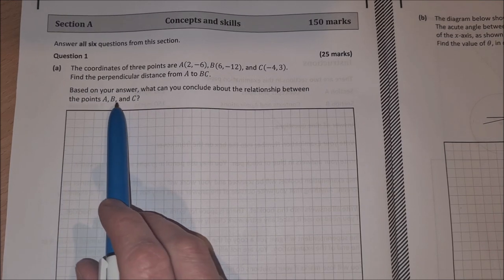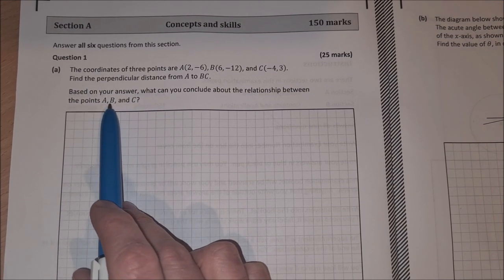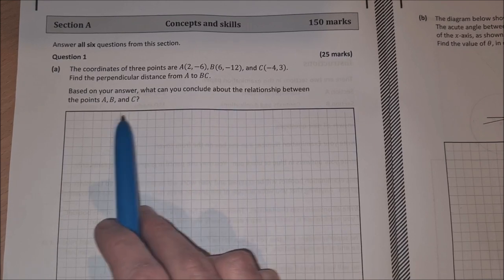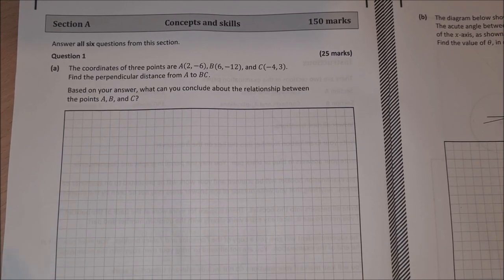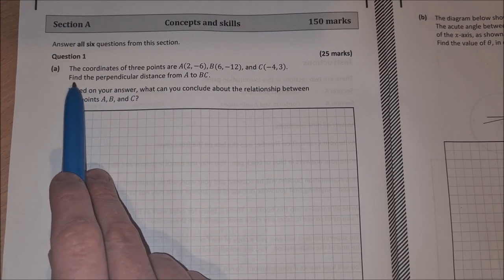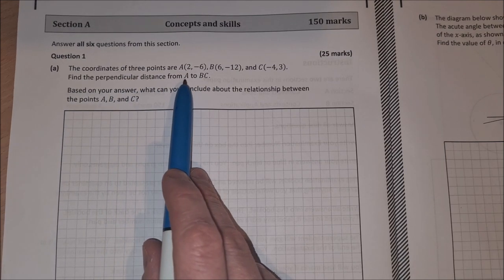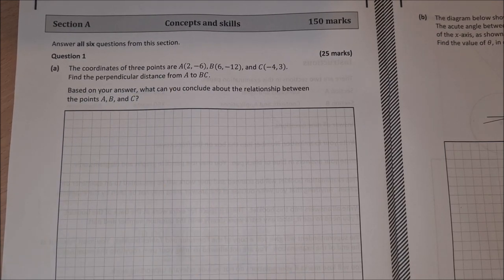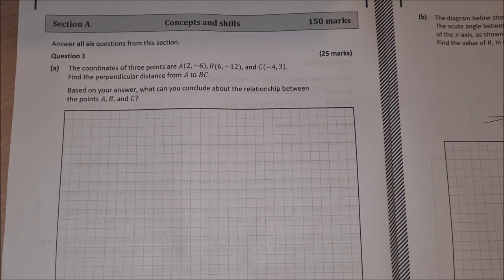If we're asked to conclude something about the relationship between three points, I'm going to suspect that they're collinear points, so that they're on the same line. That means I'm going to suspect that this perpendicular distance from A to BC will be 0.